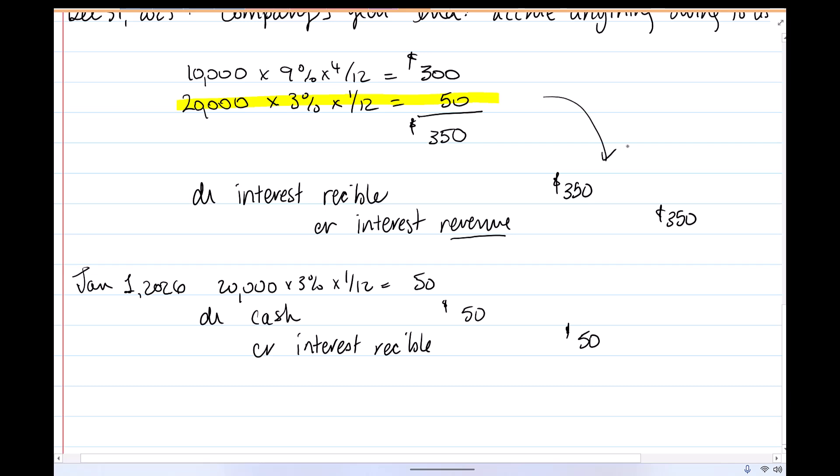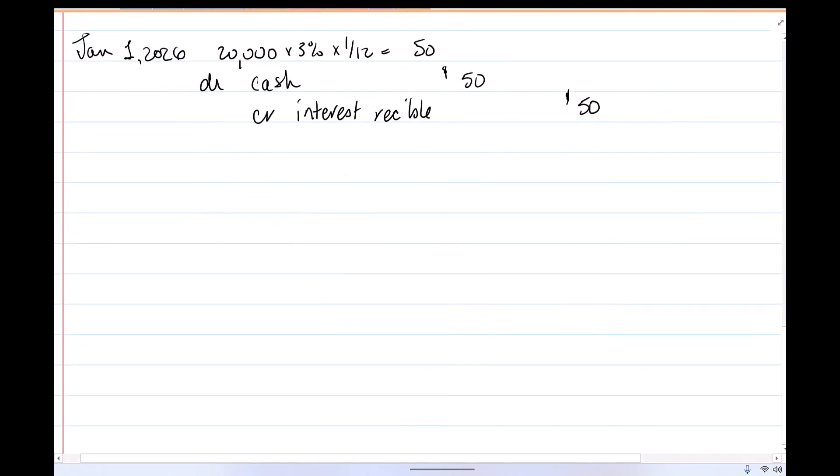So we're going to reverse it out of there. February 1, 2026. Same thing because we're going to receive cash monthly from this company. So cash of $50. This time though, it's going to go to interest revenue because we have already got the one out of our year end. Now we're in the new year. This is income we've earned in the current year.